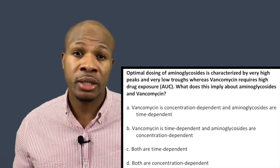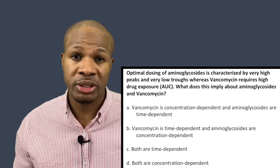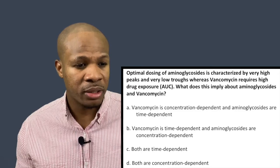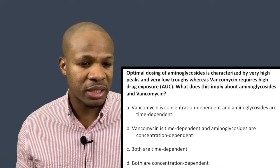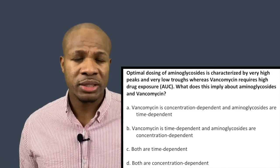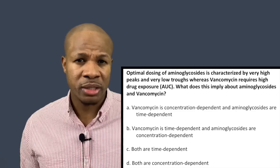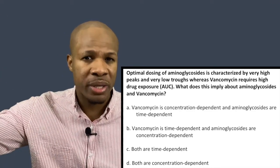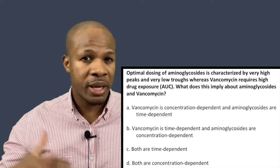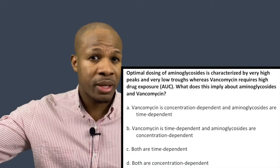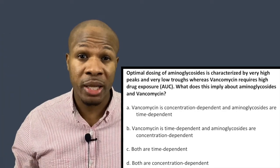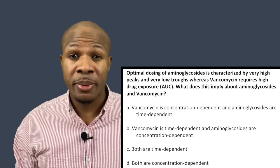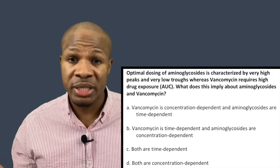Answer choice A says vancomycin is concentration dependent and aminoglycosides are time dependent. But aminoglycosides work best when the concentration is high — that's what having a high peak means. If they work best with a high peak, aminoglycosides must be concentration dependent, not time dependent. So right off the bat, answer choice A is incorrect.